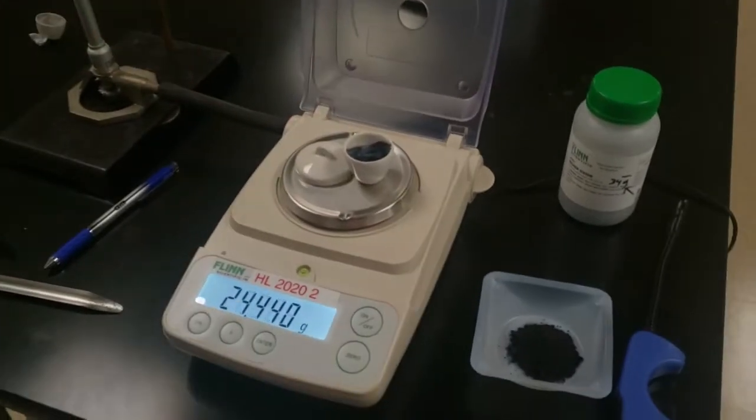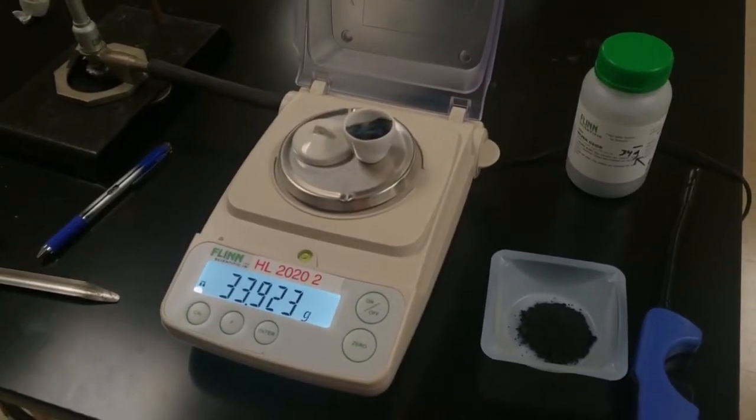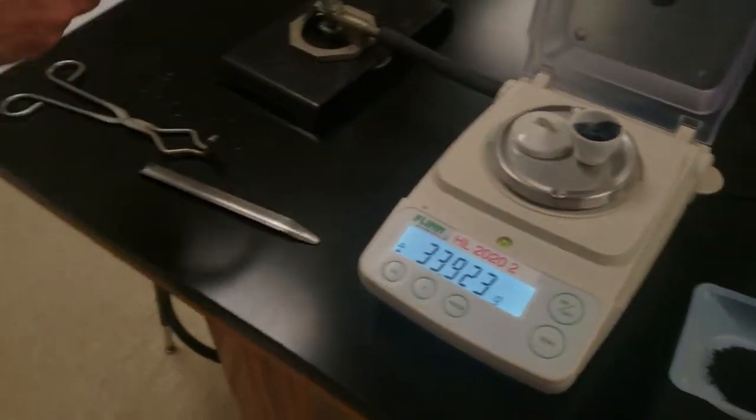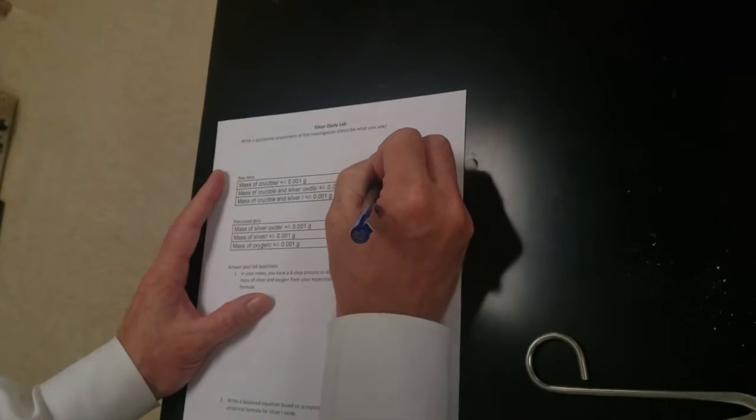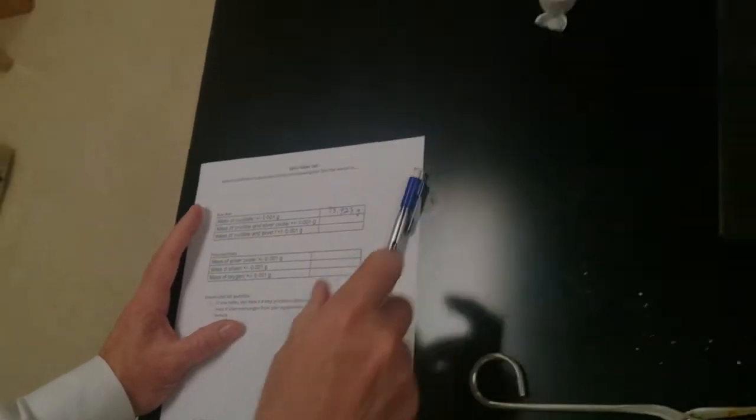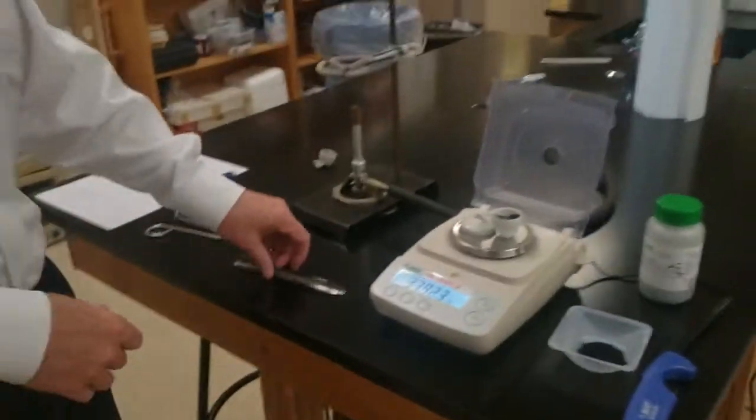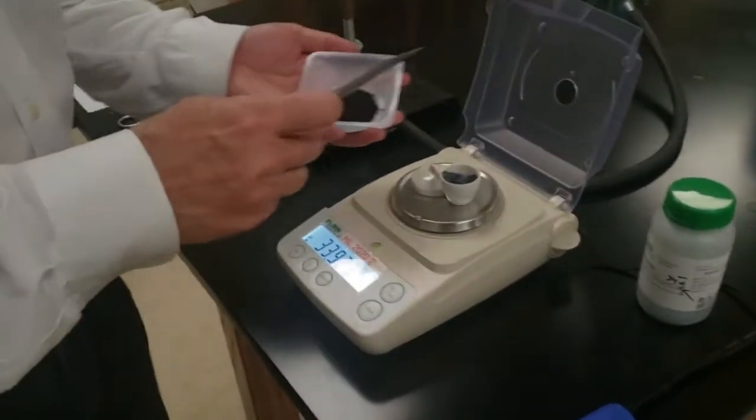So we're going to weigh it to the thousandth of a gram. That last number may flicker. Just let it stop moving around, and if it keeps flickering, just try to pick the middle one. Write down the mass of the crucible with the lid.